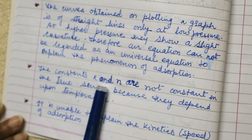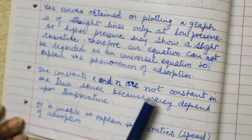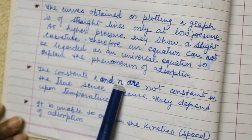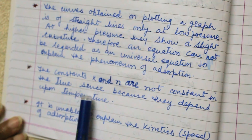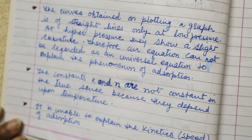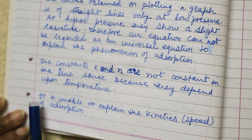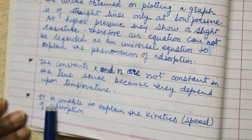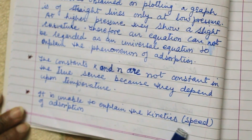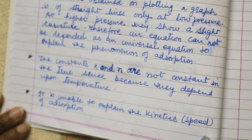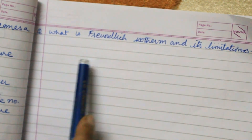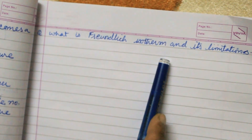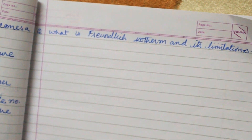The constants K and N are not truly constant because they depend upon temperature. Furthermore, the Freundlich isotherm is unable to explain the kinetics or speed of adsorption. So my question for today is: what is the Freundlich isotherm and its limitations? Thank you.